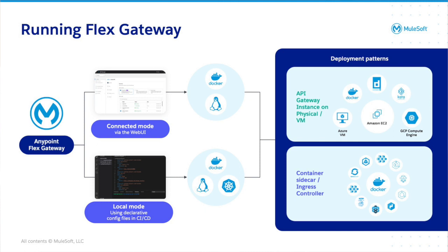The second option is to configure the gateway in local mode. Local mode enables customers to manage their Flex Gateway instance and their non-Mule APIs independently from the Anypoint control plane. This is accomplished through the use of locally stored declarative configuration files, which allows customers to define upstream services, apply policies, and configure logging. The Anypoint Flex Gateway also provides real-time reload of configuration and policy changes, ensuring zero downtime, and comes with native Fluent Bit support for easy output of logs to third-party systems.